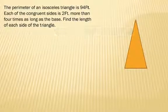All right, let me get my pen going here. Okay, you can read the question yourself. The perimeter of an isosceles triangle is 94 feet. Each of the congruent sides is 2 feet more than 4 times as long as the base. Find the length of each side of the triangle.